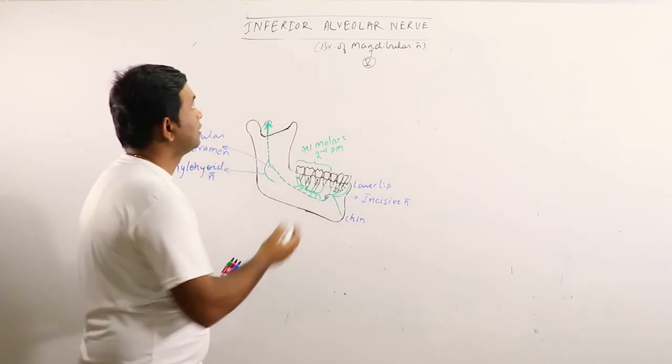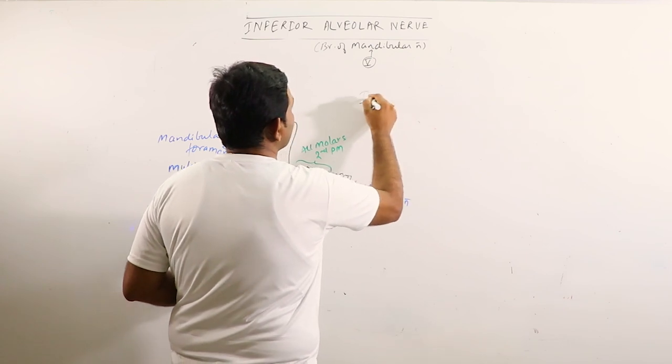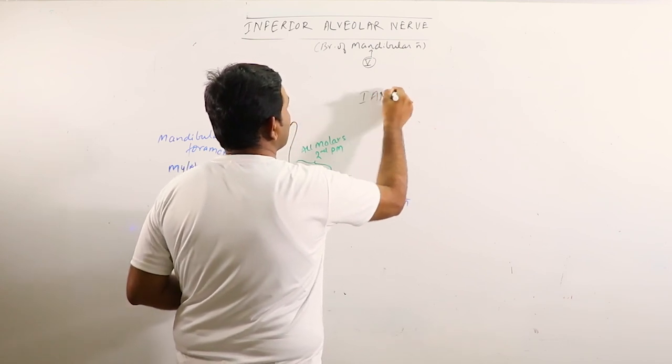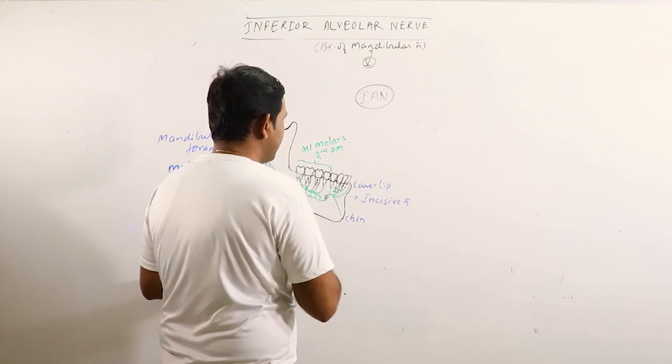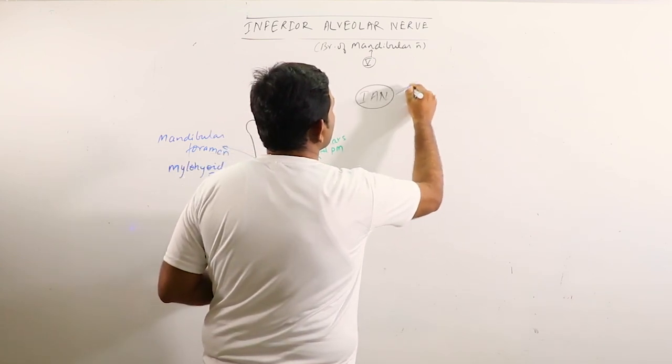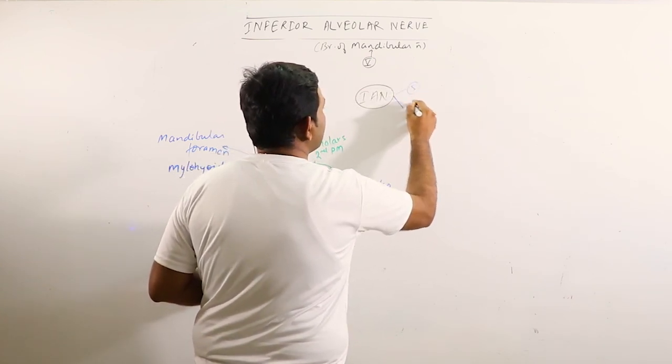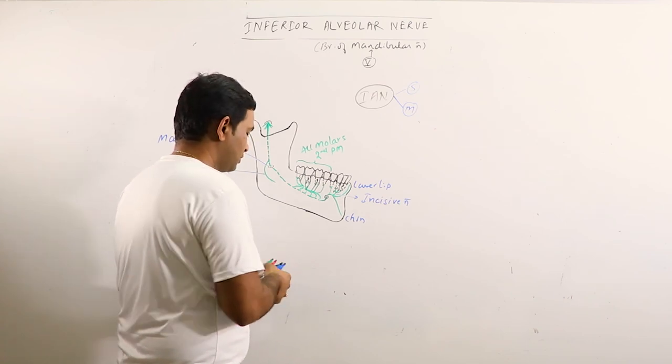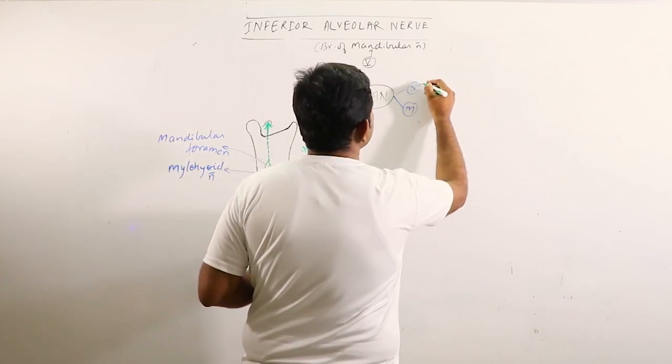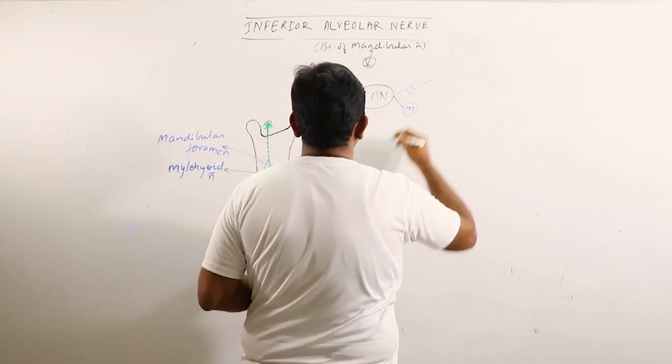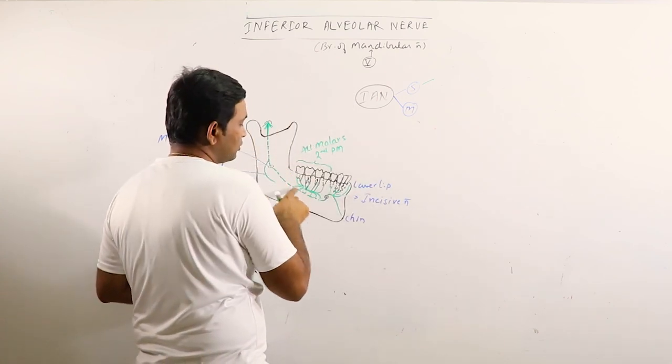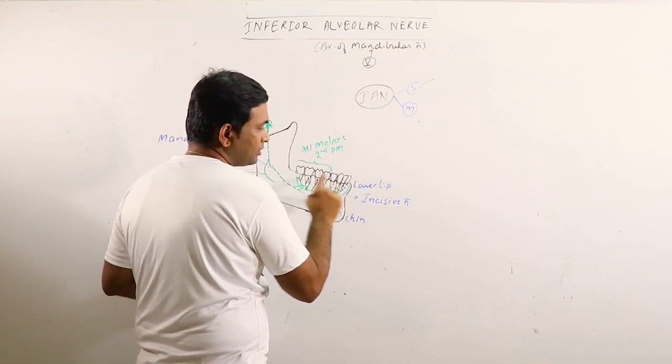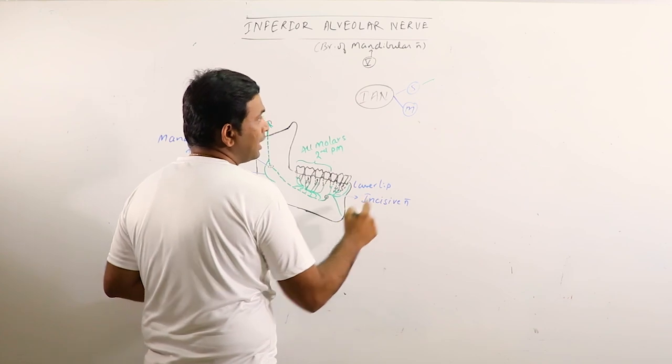We can say that the inferior alveolar nerve is having sensory branches as well as motor branches. Sensory supply is given to all mandibular teeth, lower lip and chin.